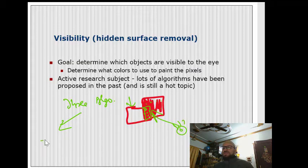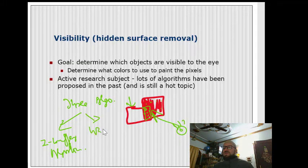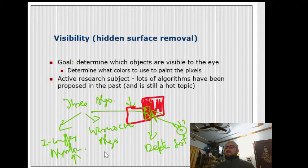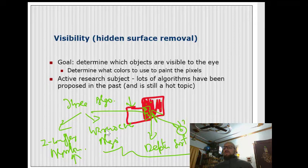There are three algorithms for this. One is the Z-buffer algorithm, the second is the Warnock algorithm, and the third is the Depth Sort algorithm. We will only discuss the Z-buffer algorithm here because the other two are not in the syllabus. The Z-buffer is an improvement over the Warnock and Depth Sort algorithms.